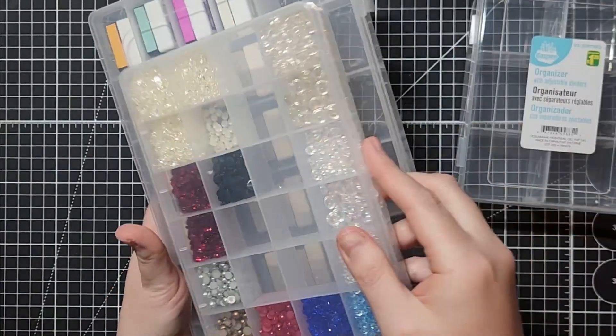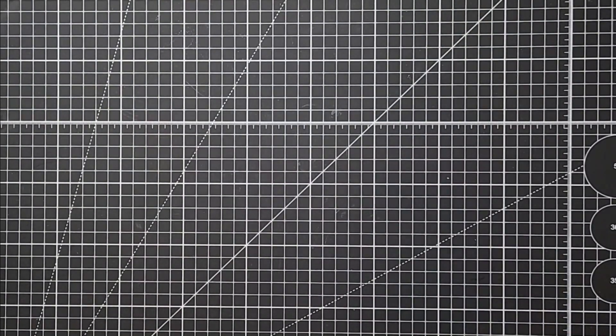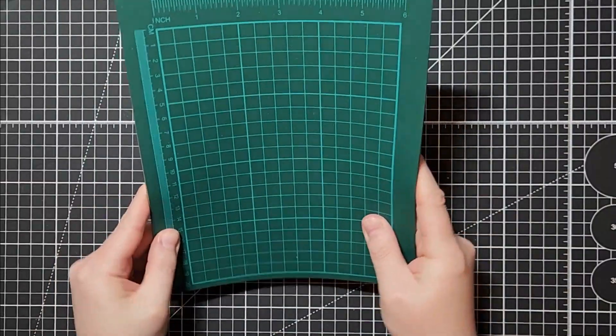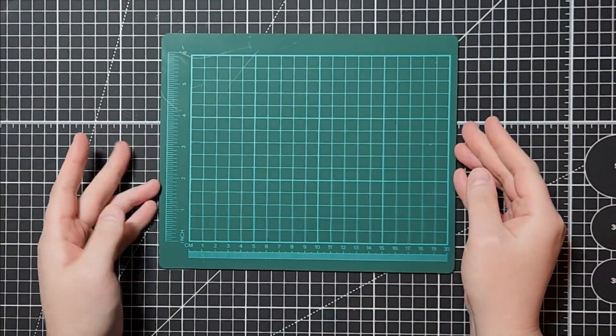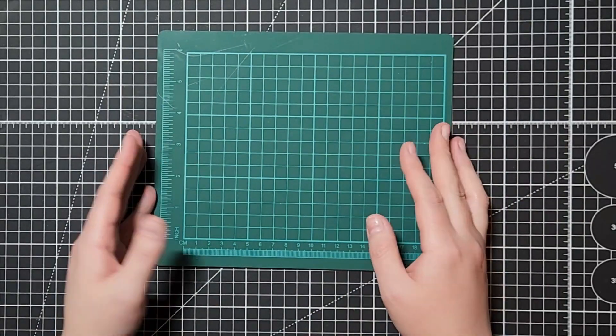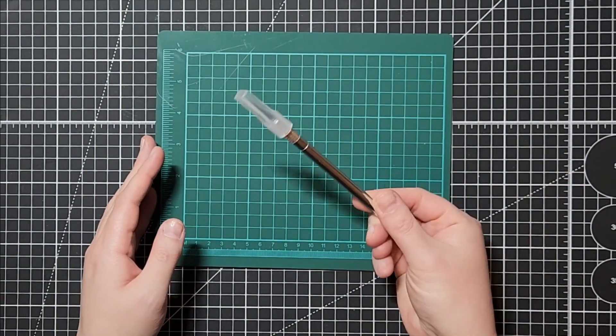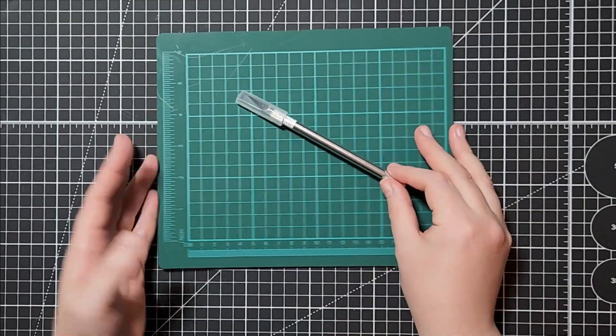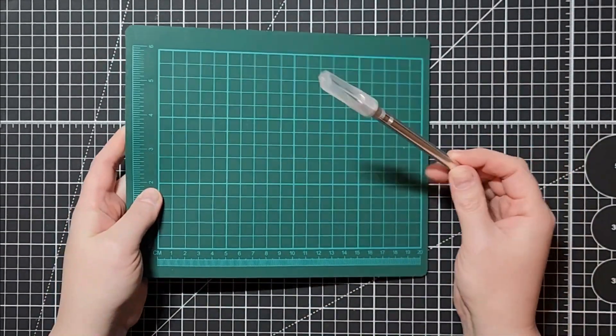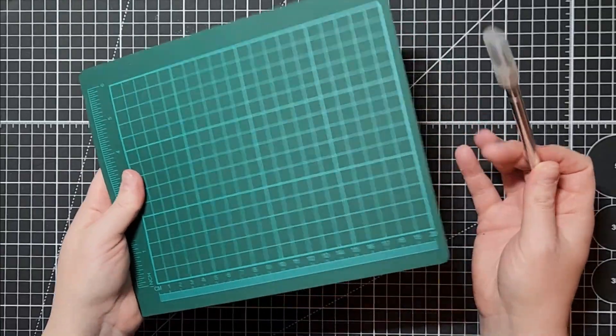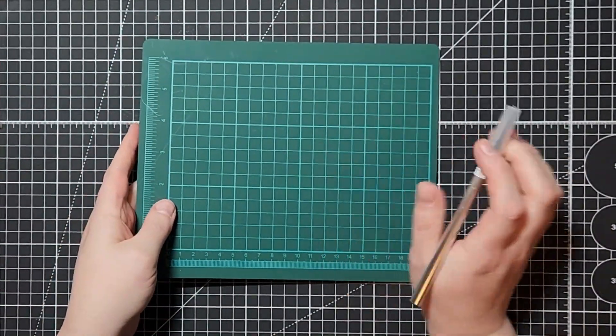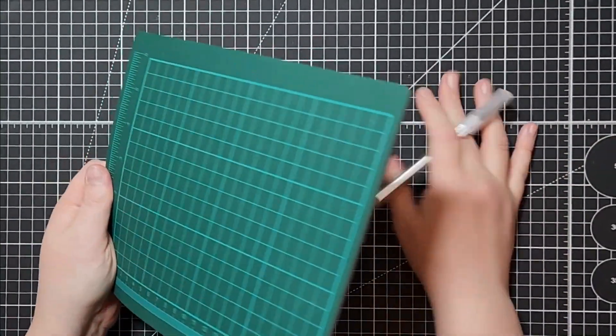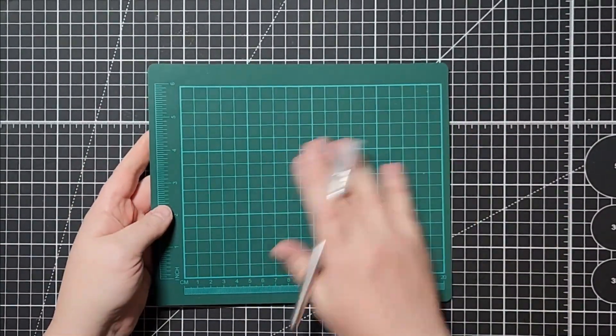Another thing you can get in the crafting aisle are these self-healing cutting mats. They're not very big but it's big enough if you just want to work on like A2 size cards and it does come with an exacto knife. So you get a knife and the mat I think for around four dollars, so it's a pretty good find.